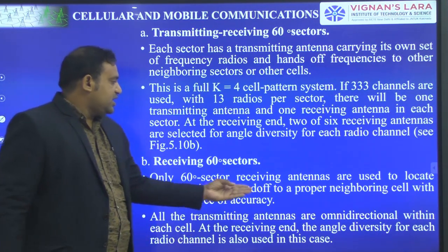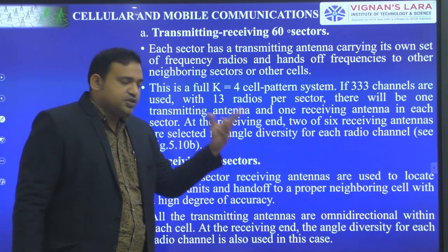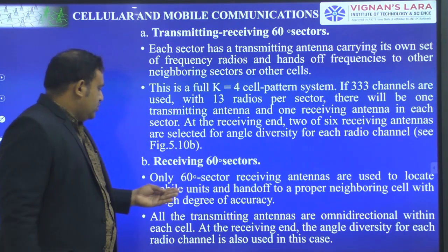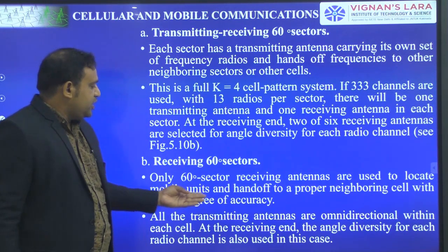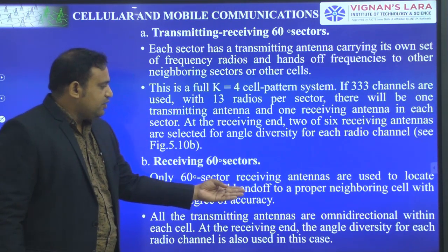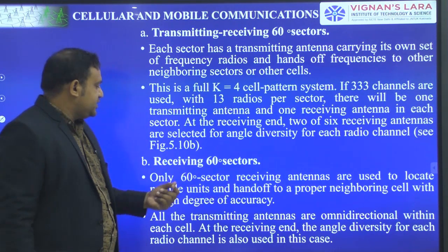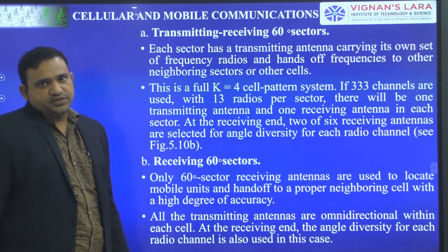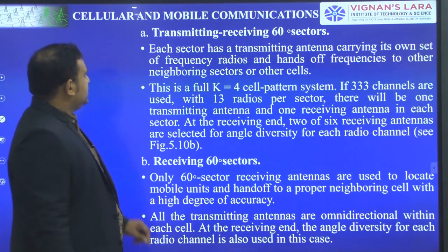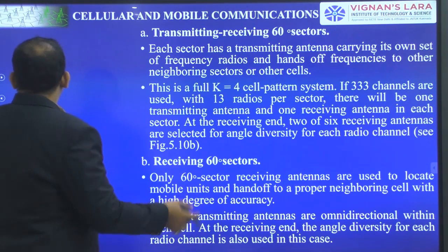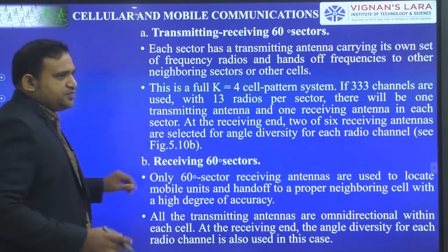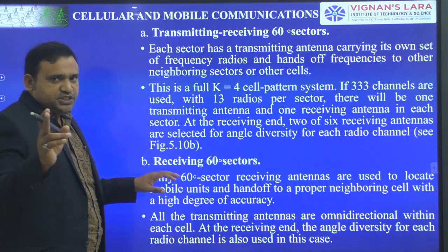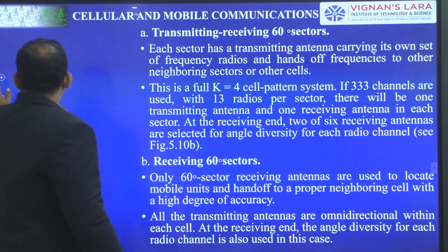Only 60-degree sector receiving antennas are used to locate mobile units and hand off to the proper neighboring cell with a high degree of accuracy. These are the two approaches with respect to K equal to 4, 60-degree sector.